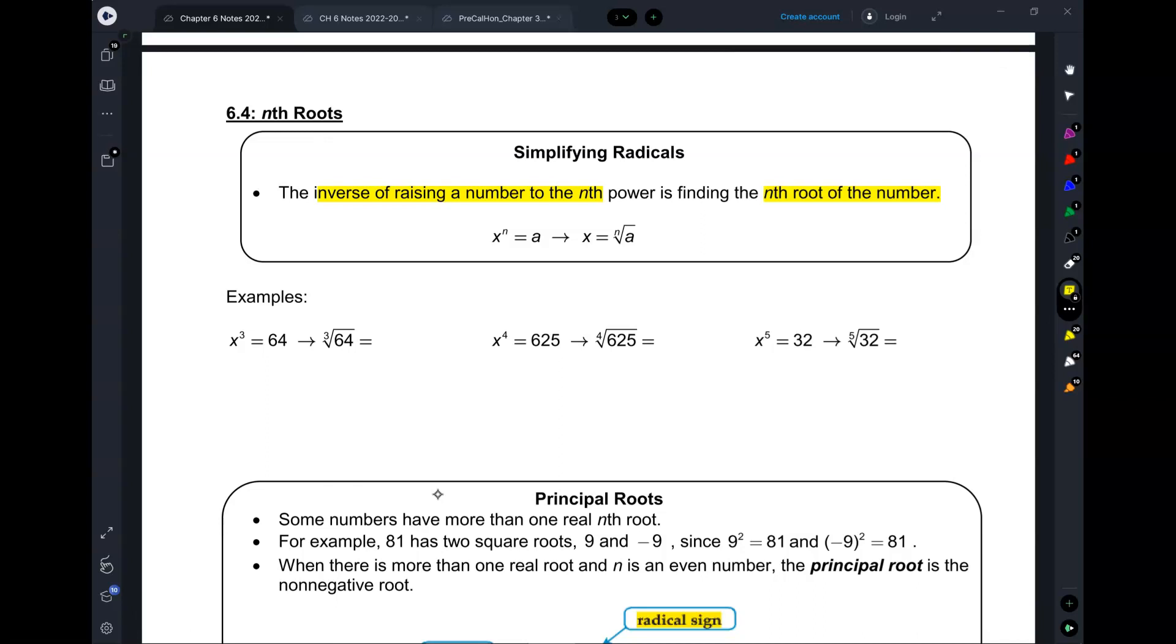And then the inverse of that is finding the nth root of a number. So for example, you can take 2, raise it to the power of 4, and you get 16. Or you can take the 4th root of 16 and get the 2 back. So x to the n equals a, or you could just take the nth root of a and get your original base back.